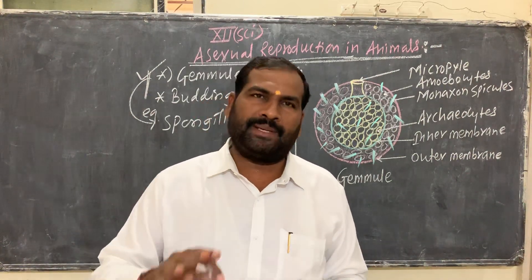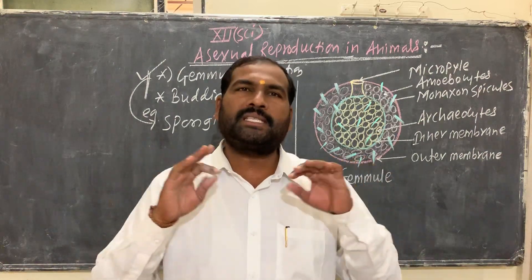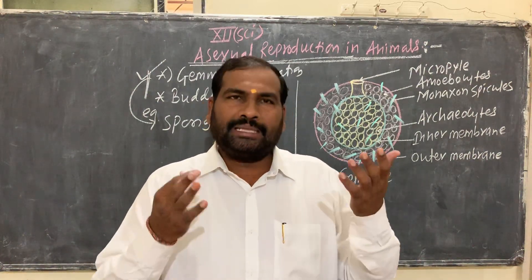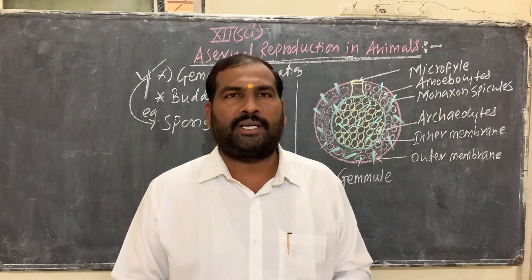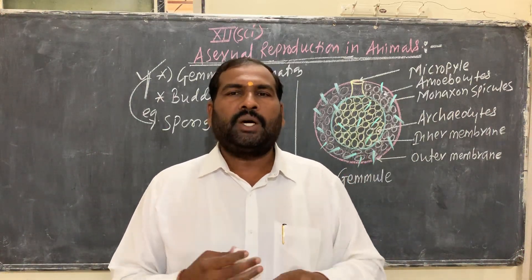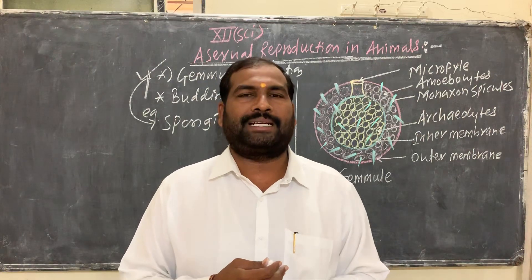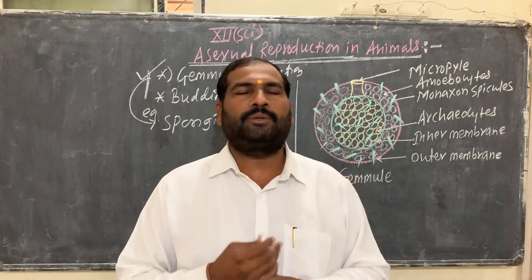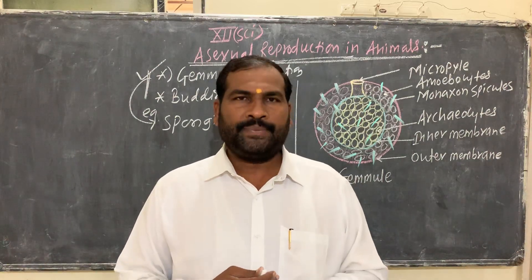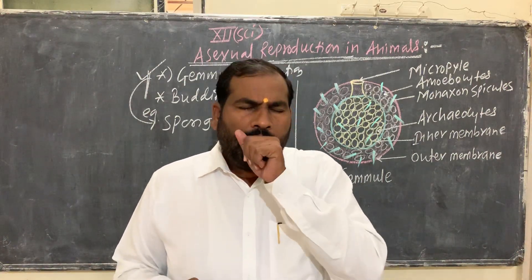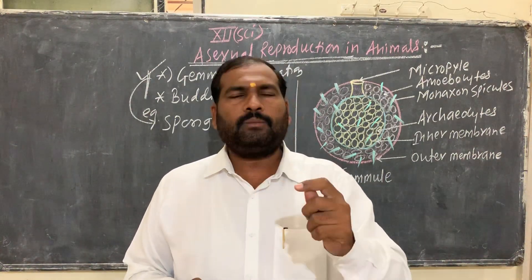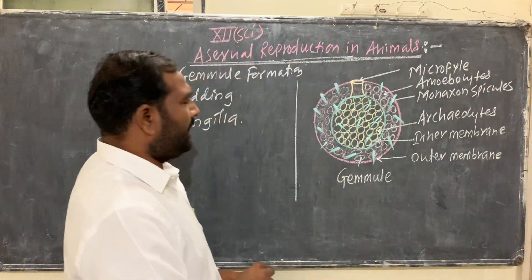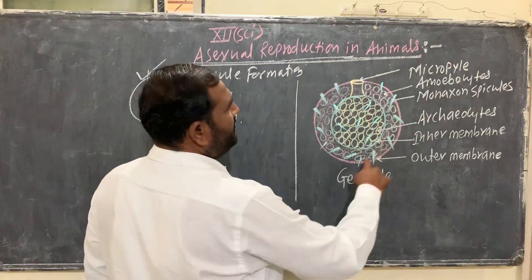When there is an occurrence of a favorable condition, the thick layer gets ruptured. On the return of favorable conditions, the gemmule hatches and develops into a new individual. So that is reproduction by means of a gemmule. Here we can see the structure of the gemmule.